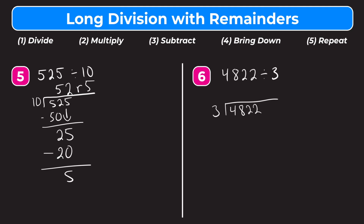Step 1 is divide: how many whole groups of 3 go into 4? That's going to be 1. Step 2 is multiply: 1 times 3 is 3. Step 3 is subtract: 4 minus 3 is 1. Step 4 is bring down — we bring down the 8, making that 18. Step 5 is repeat, so back to step 1: how many whole groups of 3 go into 18? That's going to be 6. Step 2 is multiply: 6 times 3 is 18. Step 3 is subtract: 18 minus 18 is 0. Step 4 is bring down — bring down our 2.